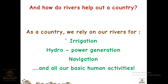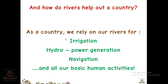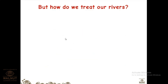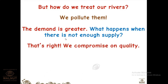Our country relies on rivers for irrigation, hydropower generation, basic needs, and navigation — water transport. The main livelihood for Indians is agriculture, so irrigation is essential. However, when nature has given us so many resources, we are not treating our rivers with respect. We pollute them, making the water inefficient for drinking or other uses, compromising water quality.